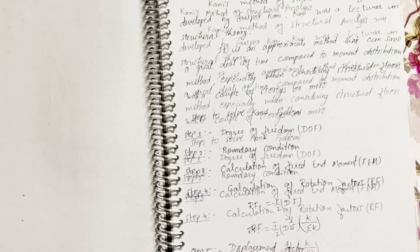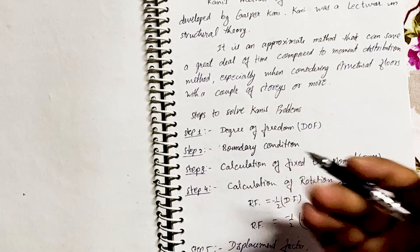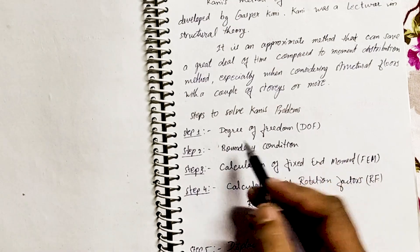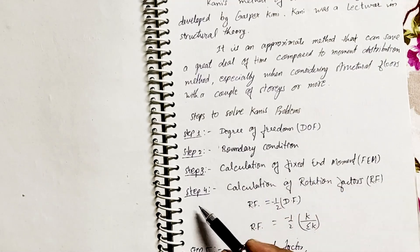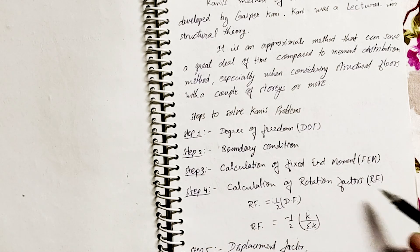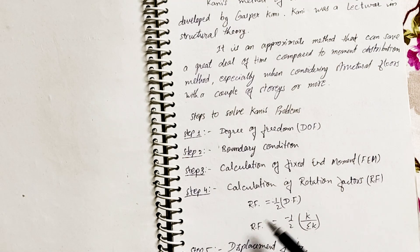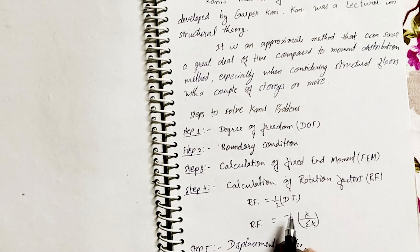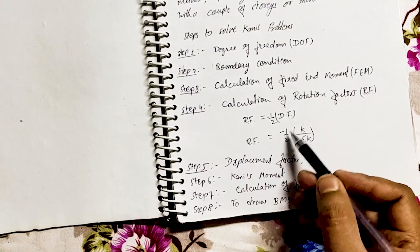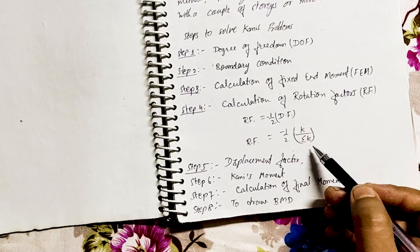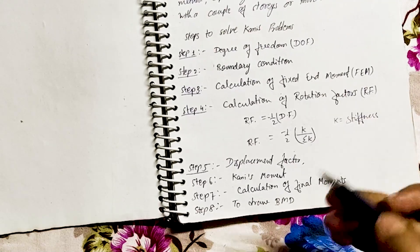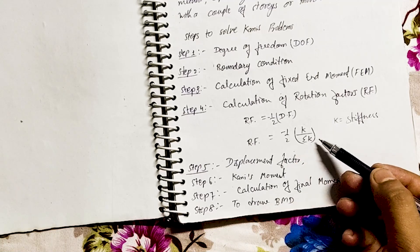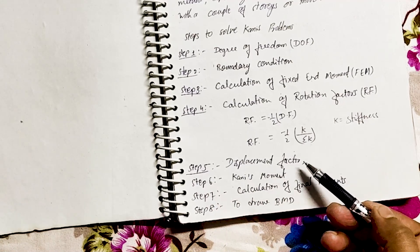There are some steps to solve numericals using Kani's method. Step 1: find the degree of freedom. Step 2: boundary condition. Step 3: calculation of fixed end moment. Step 4: calculation of rotation factor, denoted as RF. RF is calculated using the formula: RF = −(1/2) × DF, where DF is the distribution factor. So RF = −(1/2) × (K / ΣK), where K is the stiffness of the member and ΣK is the summation of stiffness.